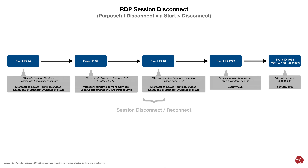Next, we have a similar but purposeful disconnect via someone clicking Start and then Disconnect. There are five event IDs in this scenario: event ID 24, 'Remote Desktop Services session has been disconnected,' in the local operational log; event ID 39, 'Session X has been disconnected by session Y,' also in the local operational log; event ID 40, 'Session X has been disconnected, reason code Z,' in the local operational log; event ID 4779, 'A session was disconnected from a Windows station,' in security; and event ID 4634 type 10 or 7, 'An account was logged off,' in the security event log.